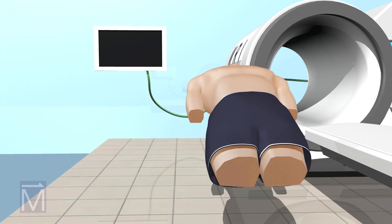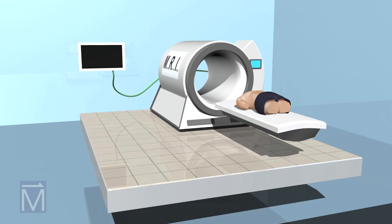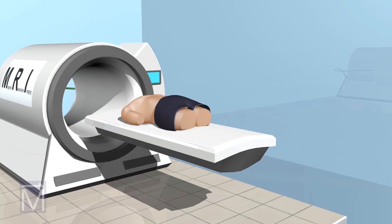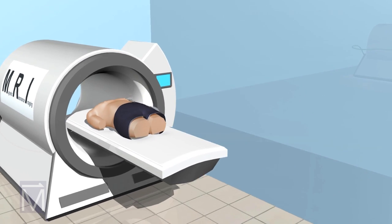Normally, these hydrogen protons spin about willy-nilly on randomly oriented axes. Put them inside an MRI machine, however, and things change.